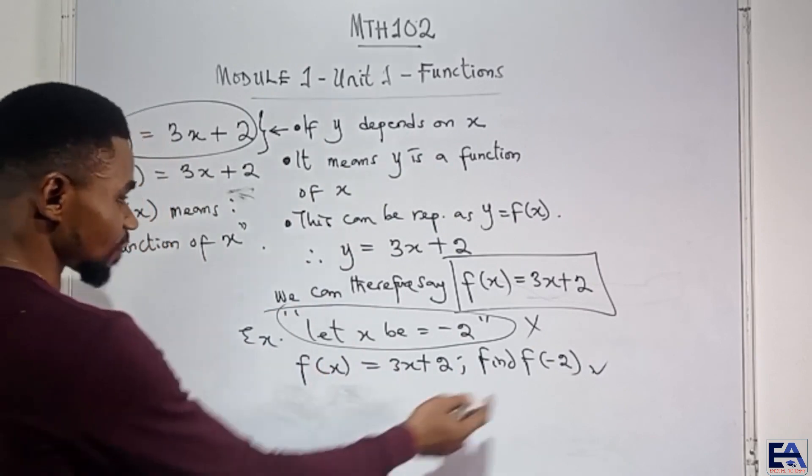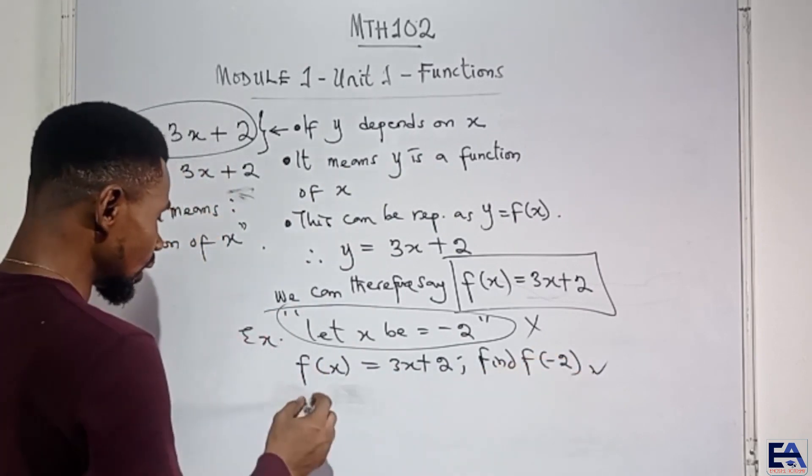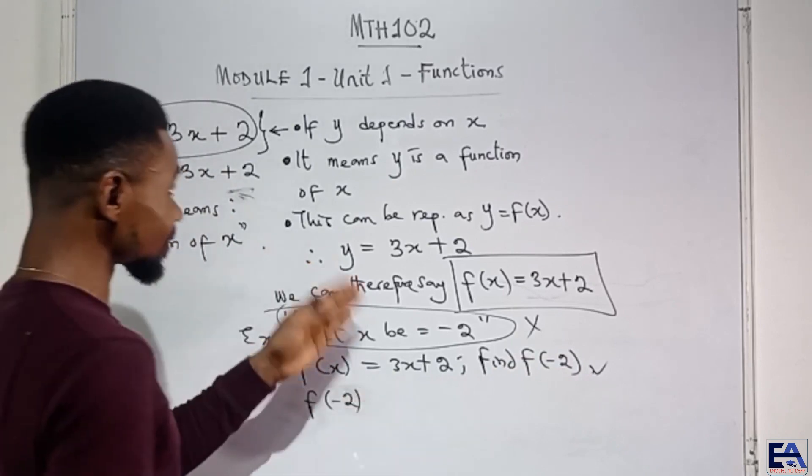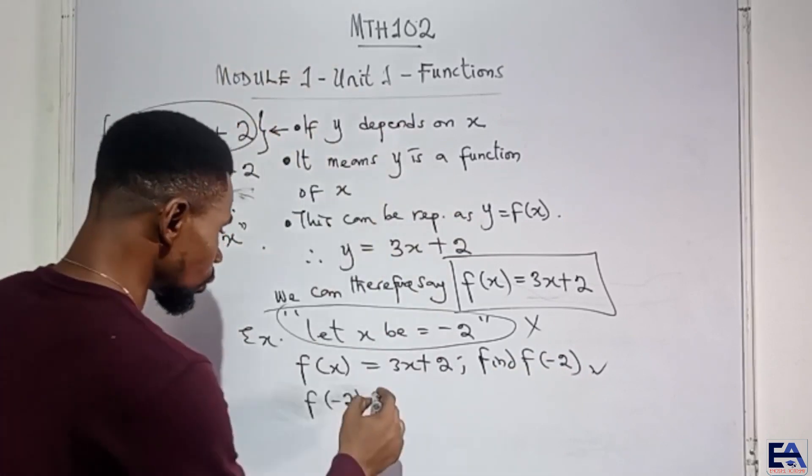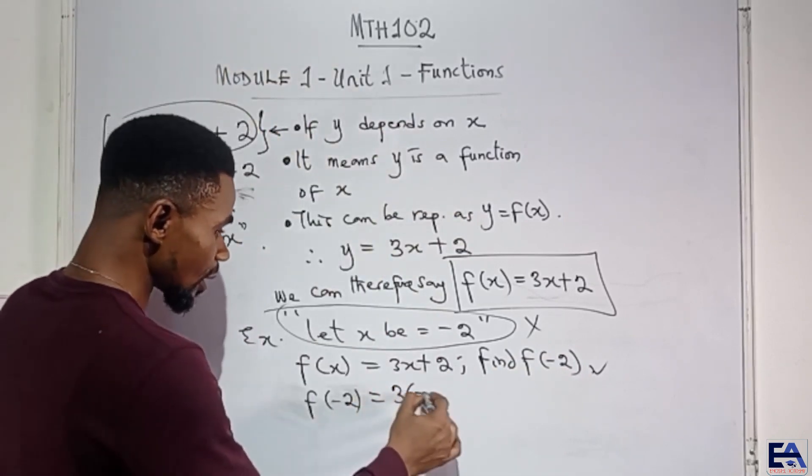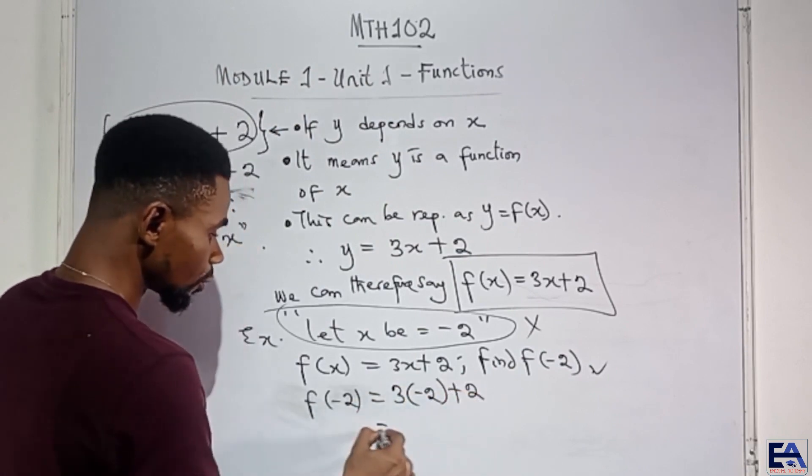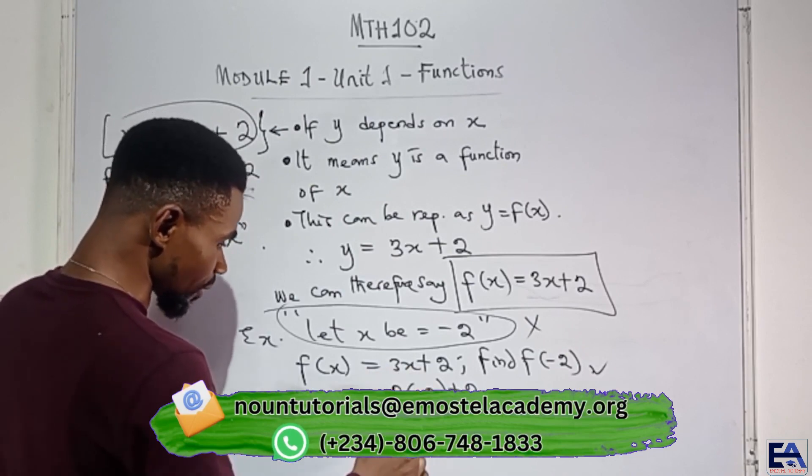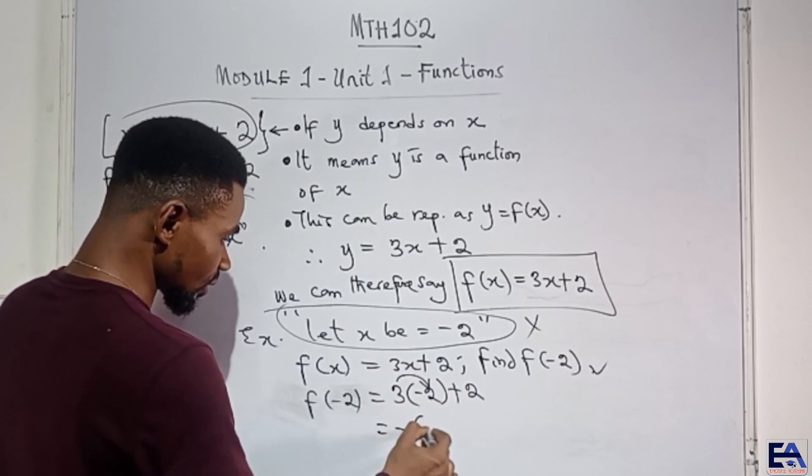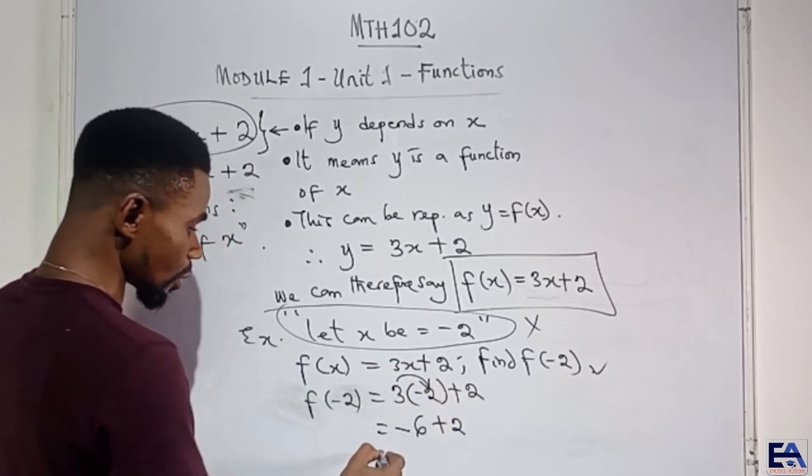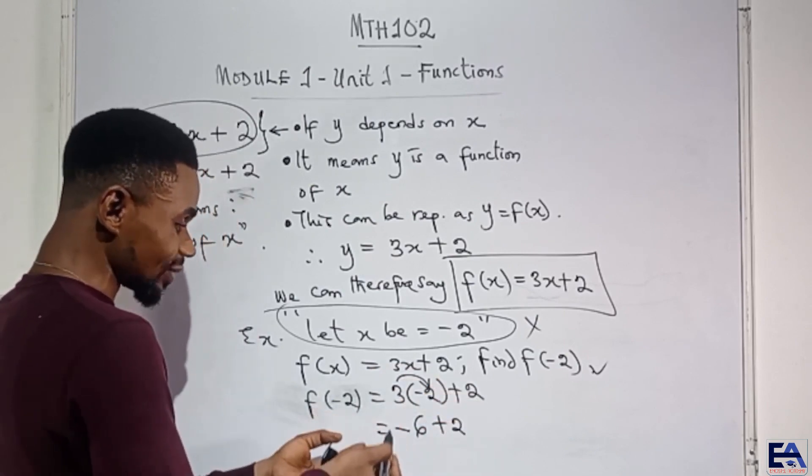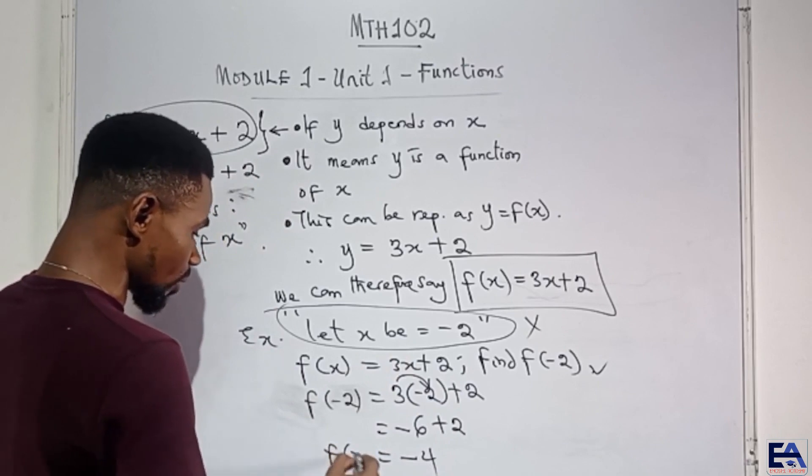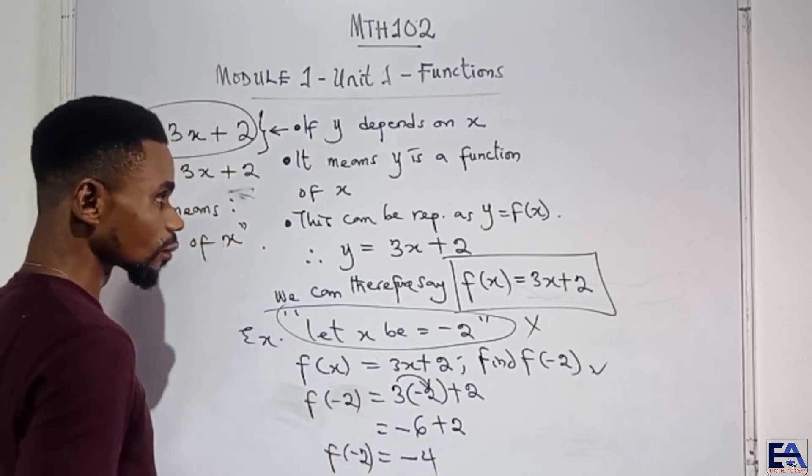So if the question now says find f of minus 2, what they are just trying to ask you to do is that anywhere you see x, replace it with minus 2. Just the same thing you've been doing before now. So we just say f of minus 2 is equal to 3 times minus 2 plus 2. Meaning positive 3 times minus 2, plus times minus is minus. 3 times 2 is 6, then you say plus 2. Minus 6 plus 2 means that I am owing 6, but I'm having 2. If I pay the 2 that I'm having, I'm still owing 4. So which means f of minus 2 is equal to 4.